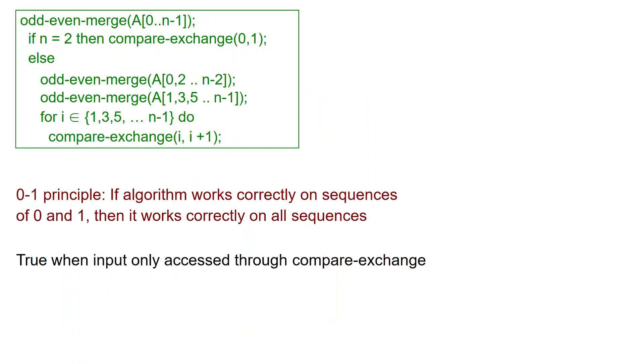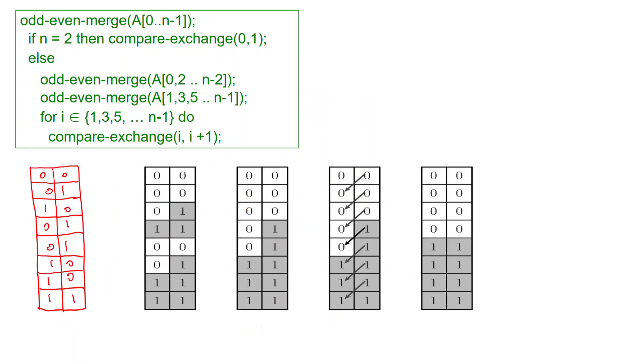This is true because it allows you to restrict attention to only algorithms which have 0 and 1 as input. And again, it's only true when the input is accessed exclusively with compare exchange operations. It wouldn't be true for an arbitrary algorithm, it's only true for oblivious algorithms which only use compare exchange. So for the correctness we just need to show that odd even merge works correctly when the input consists of 0s and 1s only.